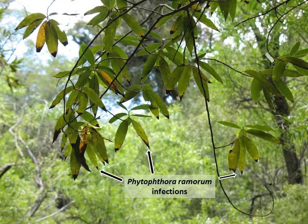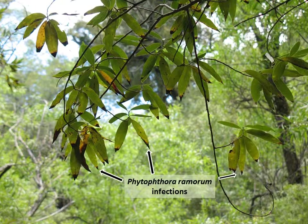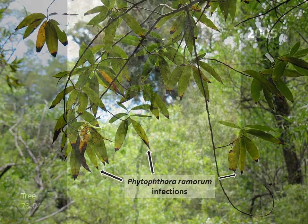Phytophthora ramorum leaf infections on California bay are the source of the spores which infect oaks.